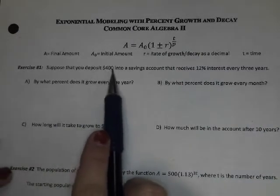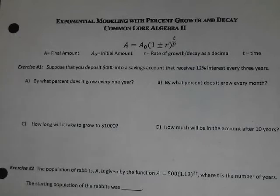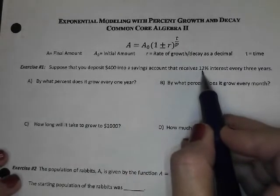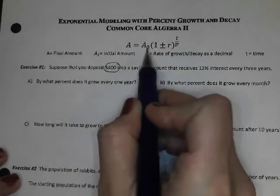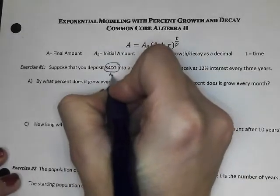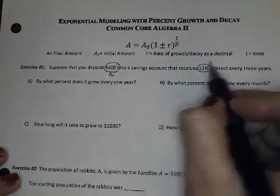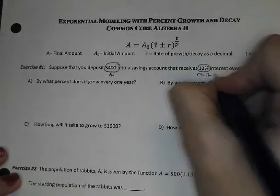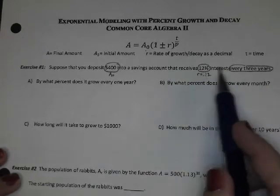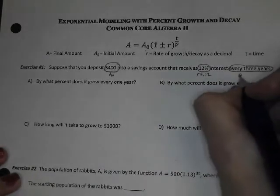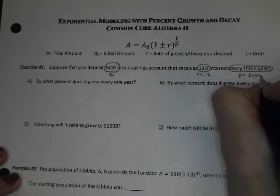The first example says suppose that you deposit $400 into a savings account that receives 12% interest every three years. So $400 is our initial amount, 12% gives us our R, and this is the first time we've seen a change in P. This percentage is happening every three years, so P equals three years.